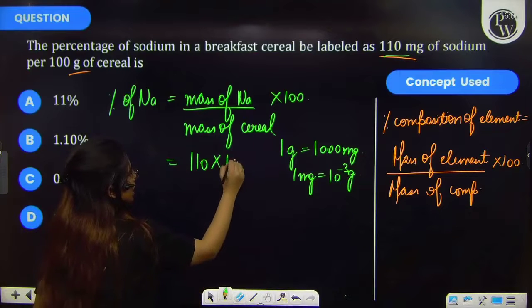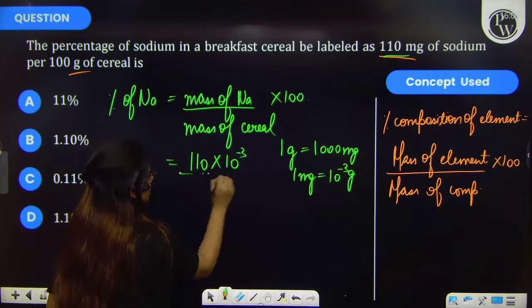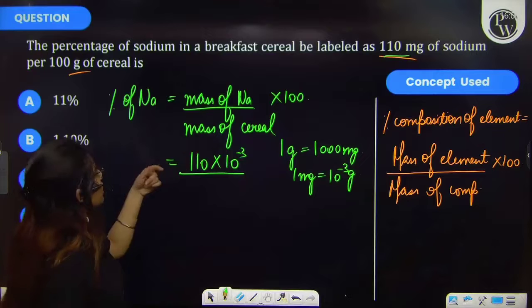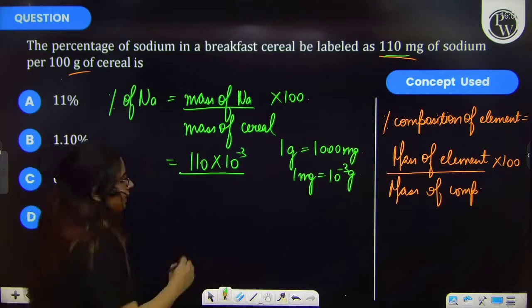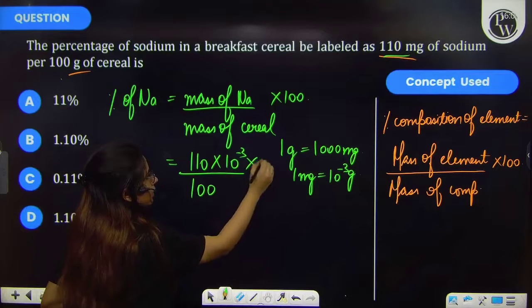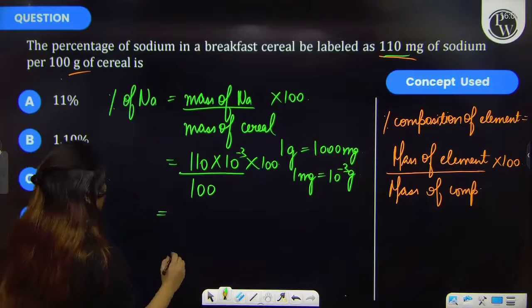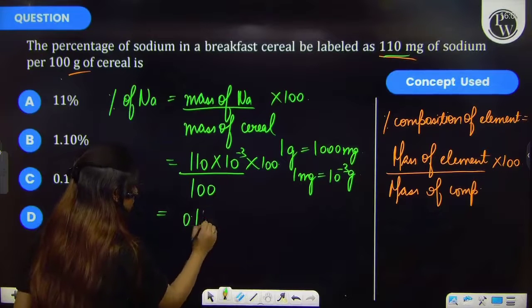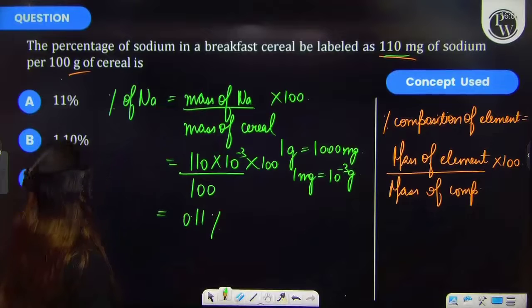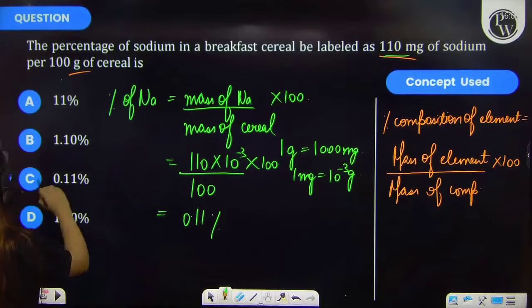Here we have to multiply by 10 raised to the power minus 3, then mass of the cereal is 100 g into 100. On solving this, you will be getting 0.11 percent and therefore, your option C is correct.